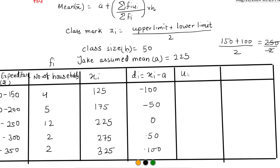Next step is to find Ui. The formula for Ui is Di divided by h, i.e., Ui = Di/h. Since h = 50: −100/50 = −2, −50/50 = −1, 0/50 = 0, 50/50 = 1, 100/50 = 2.